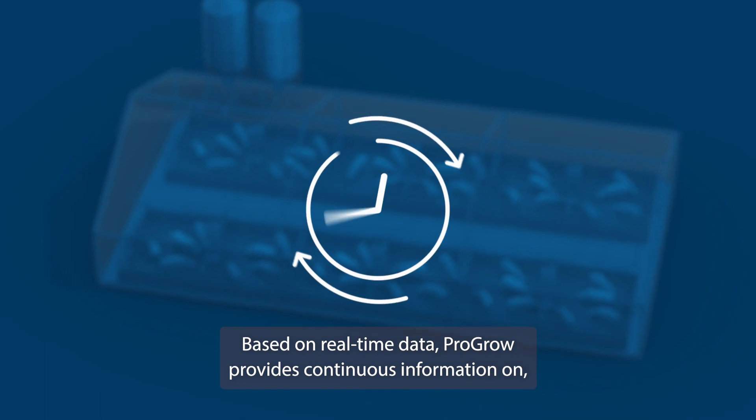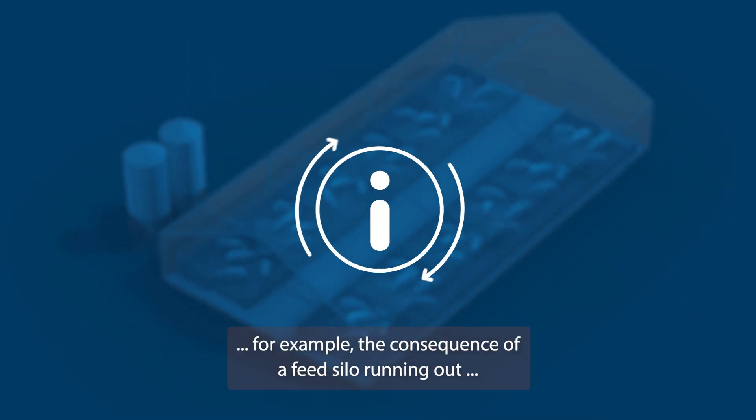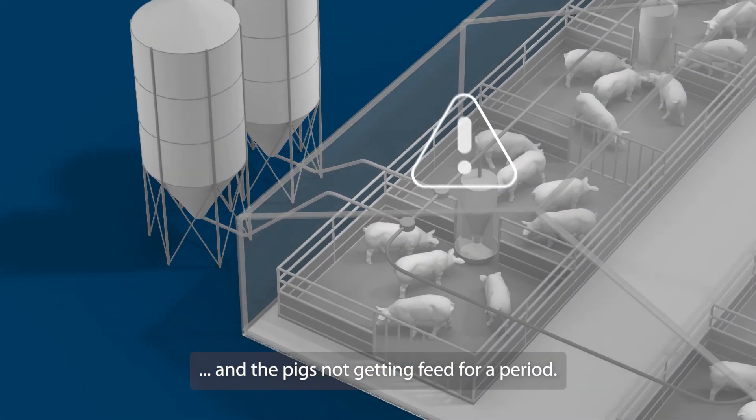Based on real-time data, ProGrow provides continuous information on, for example, the consequence of a feed silo running out and the pigs not getting feed for a period.